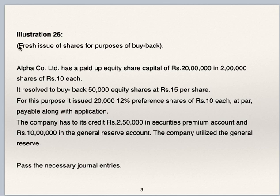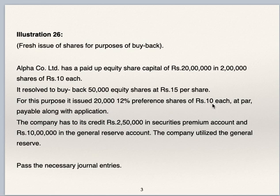Go to illustration 26, fresh issue of shares for the purpose of buyback. Alpha Company Limited has paid up equity share capital of Rs 20 lakhs in 2 lakh shares of Rs 10 each. It resolved to buyback 50,000 equity shares at Rs 15 per share. For this purpose, it issued 20,000 12% preference shares of Rs 10 each at par, payable along with application. The company has to its credit Rs 2,50,000 in securities premium account and Rs 10,00,000 in general reserve account. The company utilized the general reserve. Pass necessary journal entries.